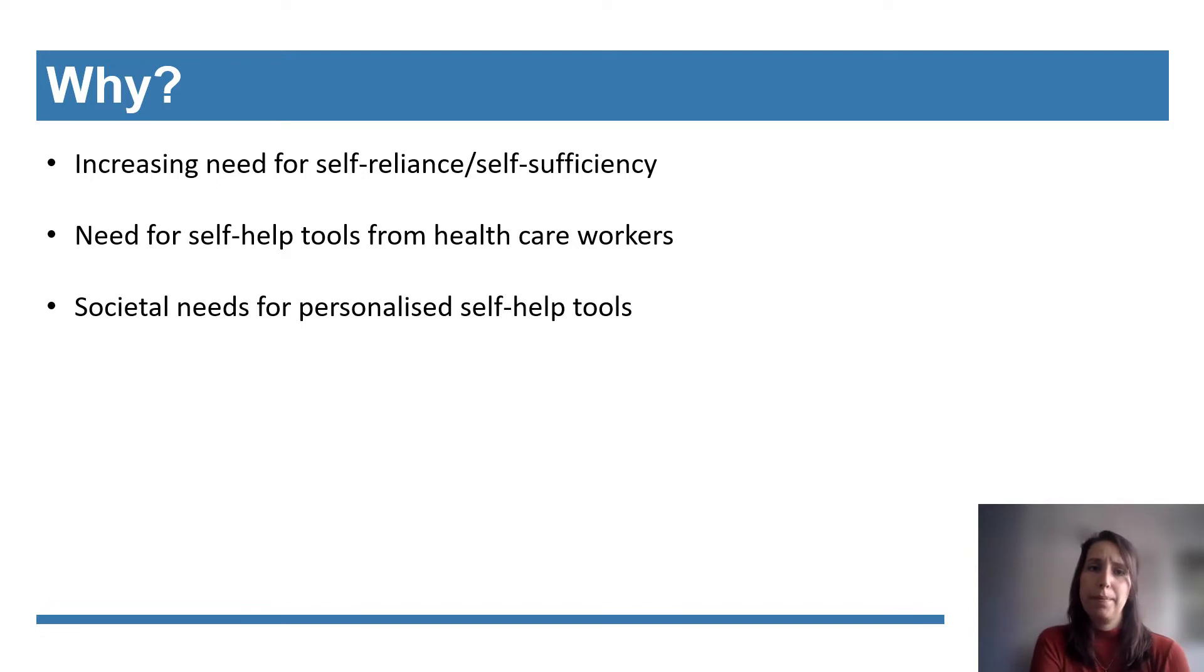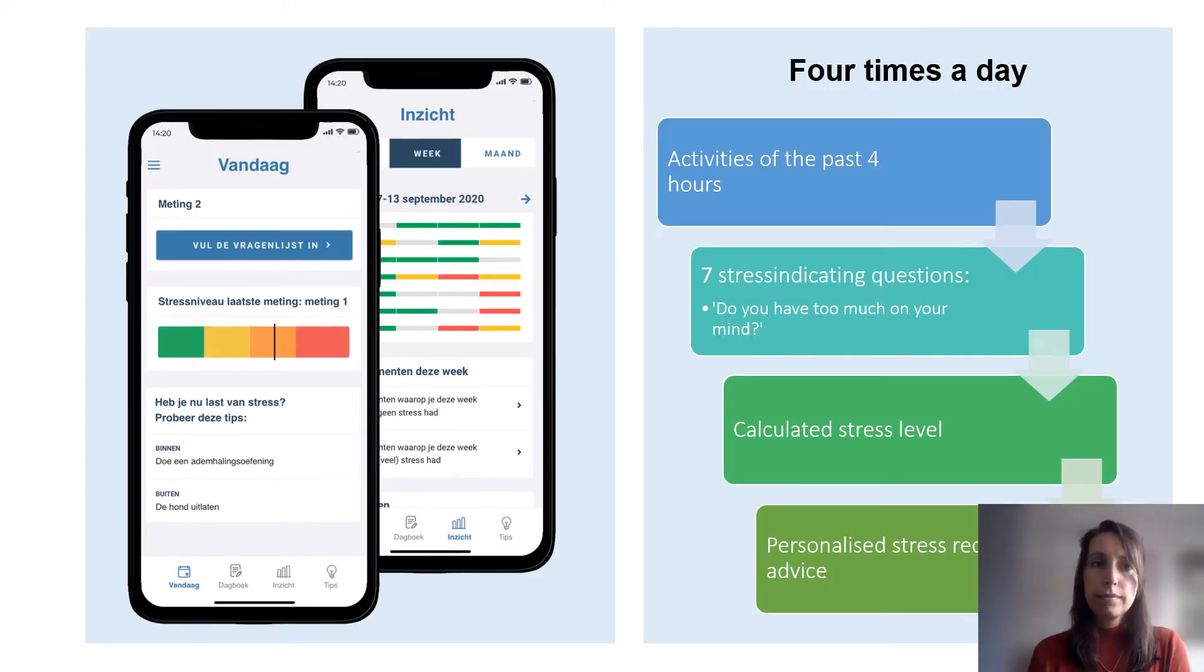We made this simple app with clients with autism who could use it for themselves like a self-help tool, and there is of course the societal need for personalized self-help tools. As mentioned in the video, SAM prepares a questionnaire four times a day for users with questions about the activities of the past four hours and how they went, followed by seven indirect stress questions such as 'do you have too much on your mind.' The app calculates a stress level and verifies it with the user, and finally the user receives personal stress reducing advice.